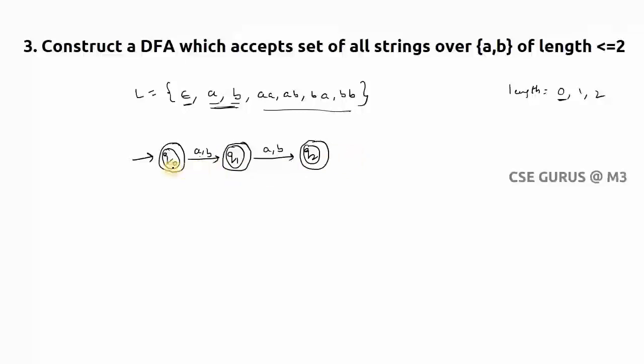First, check out: is it a DFA? For q0 to a, yes, transition is there. Q0 to b, yes it is there. Q1 to a, yes it is there. Q1 to b, it is there. What about q2?